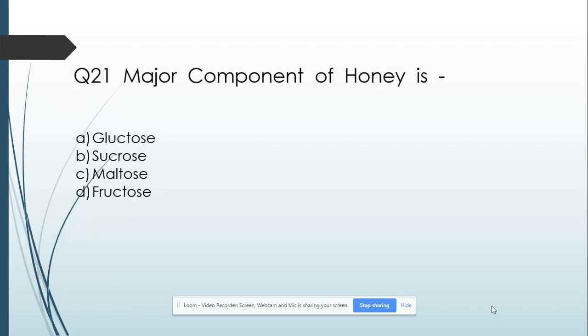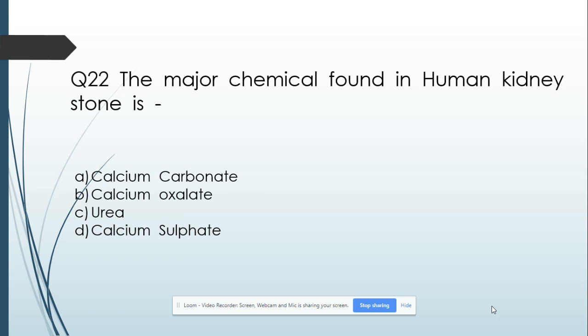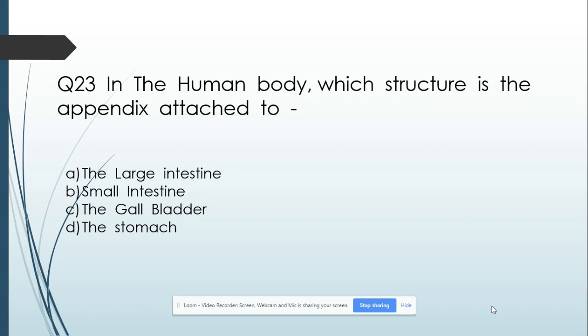Question number 21: The major component of honey is — Option A: Glucose. Option B: Sucrose. Option C: Maltose. Option D: Fructose. And its answer is Fructose. Question number 22: The major chemical found in human kidney stones is — Option A: Calcium carbonate. Option B: Calcium oxalate. Option C: Urea. Option D: Calcium sulfate. And its answer is Calcium oxalate.